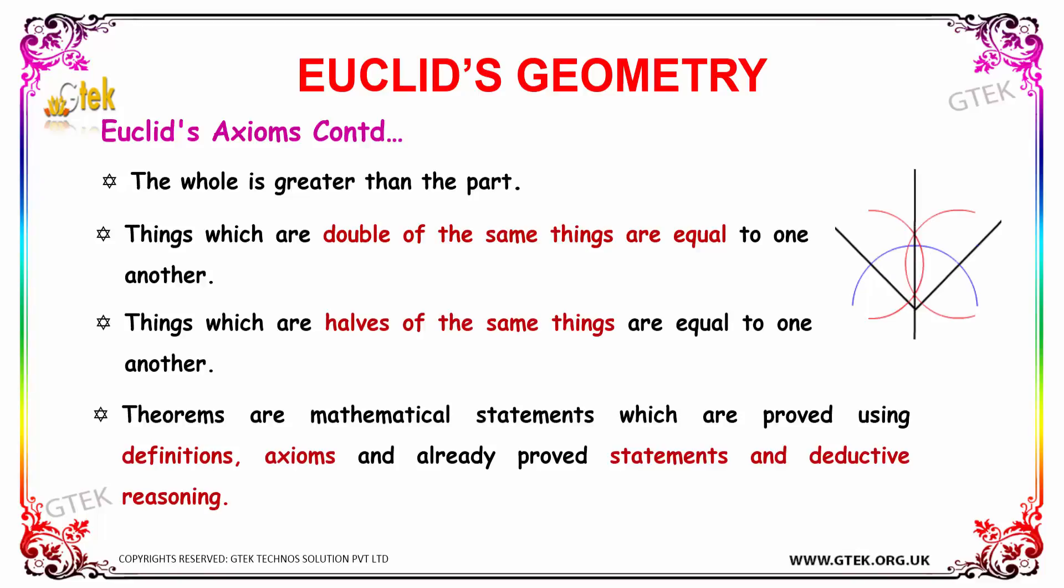We have a continuation for Euclid's axioms: the whole is greater than the part. Things which are double of the same things are equal to one another. And things which are halves of the same things are equal to one another.